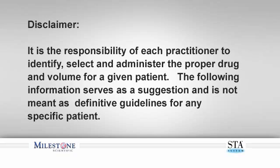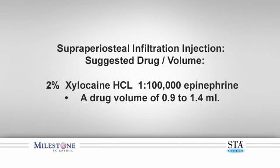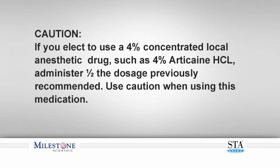The following information serves as a suggestion and not meant as definitive guidelines for any specific patient. The suggested drug and volume to perform the supraperiosteal buccal infiltration injection is 2% xylocaine HCL, 1 part per 100,000 epinephrine. A drug volume of 0.9 milliliters to 1.4 milliliters, which is equivalent to 3 quarters to 1 full cartridge, is the suggested volume when performing this infiltration. If you elect to use a 4% concentrated local anesthetic drug, such as 4% articaine HCL, use half the dosage previously suggested and use extreme caution when using these medications.